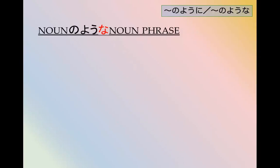Here we're looking at the grammar pattern なんのような noun phrase and なんのように verb or adjective phrase. のよう is, the よう means to resemble something, so it's linking. えのようなび is a B that is like A.